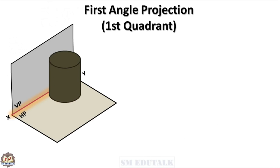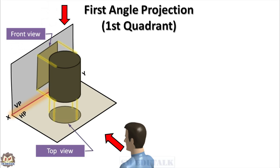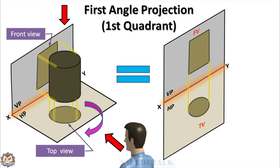In first angle projection, the object should be kept in the first quadrant, where the object lies between the observer and the plane of projection. The same condition must be maintained to get all views. When the object is viewed from the front, the top view is obtained on HP. Both views appear on different planes, so HP is rotated 90 degrees clockwise to show both on a single plane. Now VP and HP appear as a single plane, separated by the reference line XY. The front view comes above the XY line and the top view comes below the line.